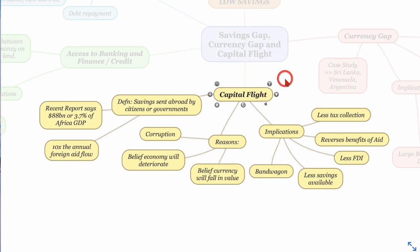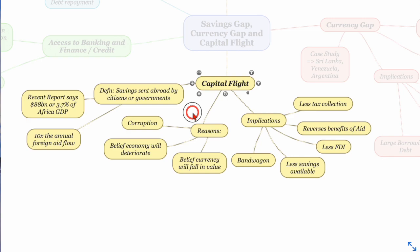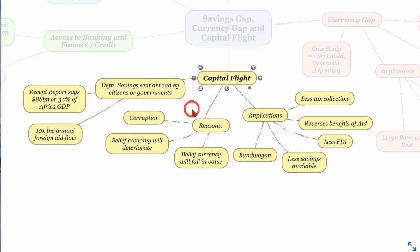And then you've got the problem of capital flight and that is any savings that do happen are then sent abroad. They're sent abroad by the citizens or by governments. A report out recently about the African continent, the whole continent of Africa, said that a year or so ago, 88 billion dollars was sent abroad. There was this capital flight. It amounted to 3.7% of African GDP. And to put that in context, it was 10 times the foreign aid flow that came into Africa. So 10 times that foreign aid was leaking from Africa, as it were, and sent overseas to mainly countries like Switzerland, where their banking regulations are more or less than perfect, let's say.